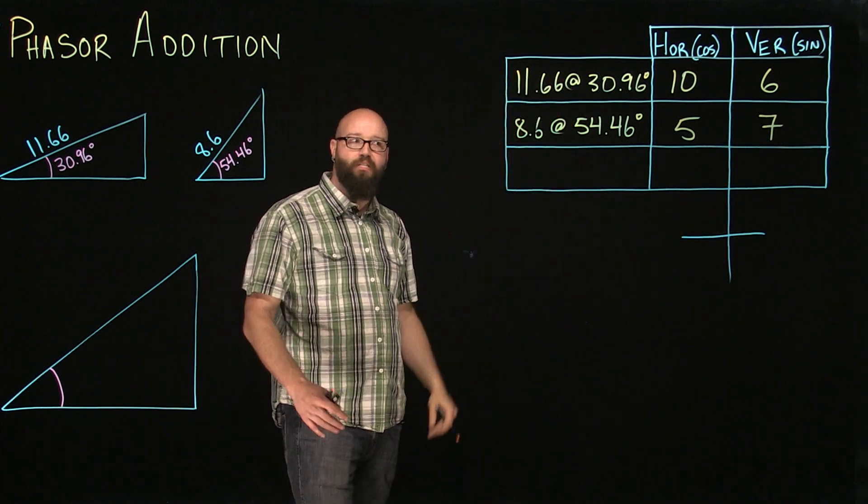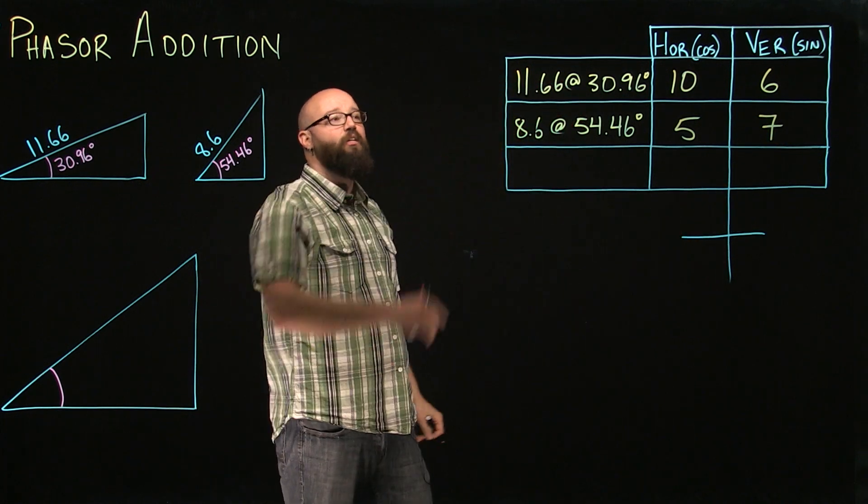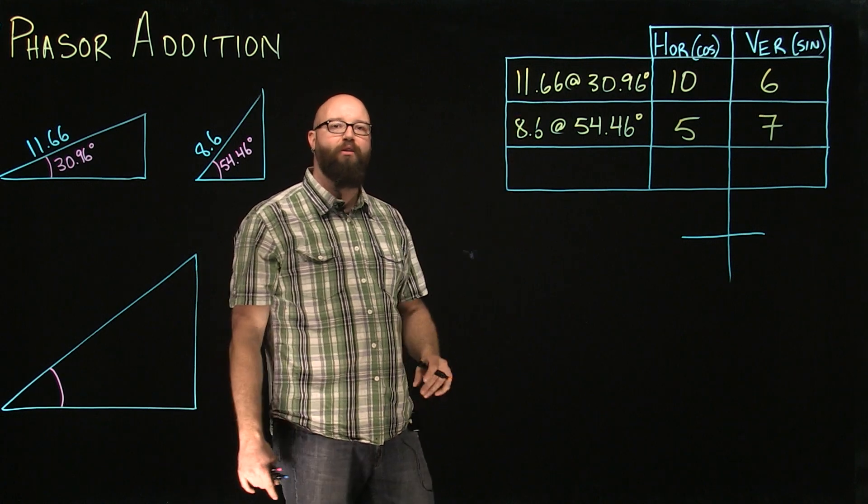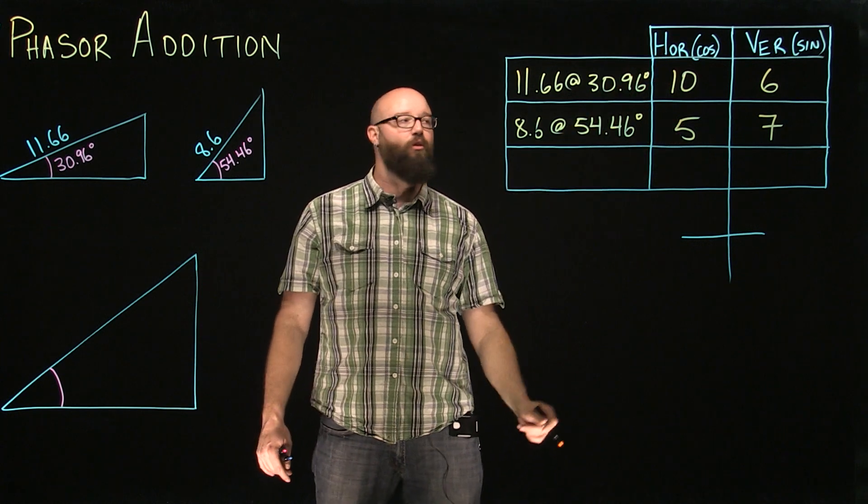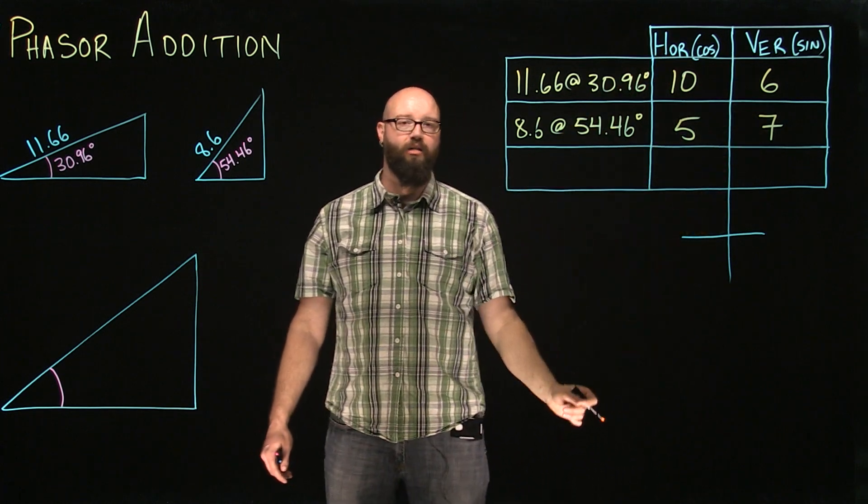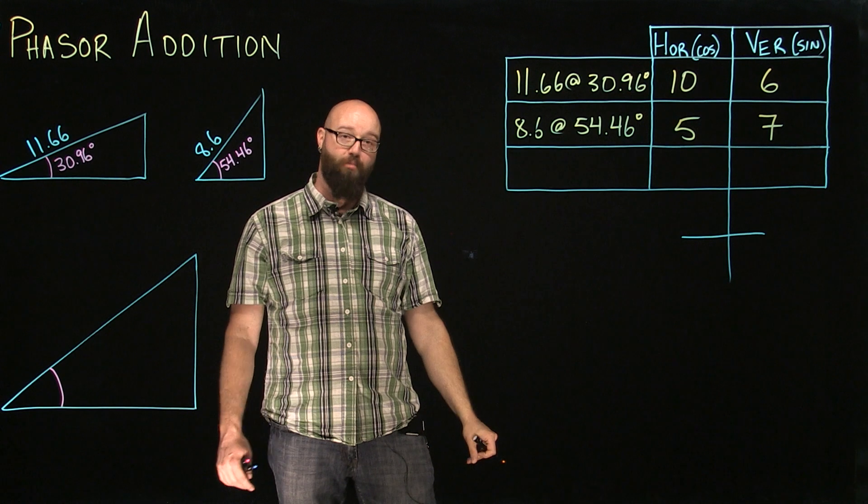Now, as previously mentioned, I cannot add these two together. I can't add my hypotenuse because they're at different angles. However, when we talk about our horizontal, our horizontals are on the 0 axis, our verticals are on the 90 axis. I can add those together because they're at the same angle.